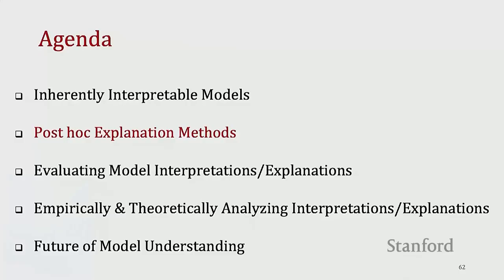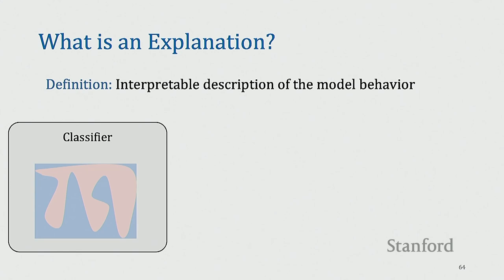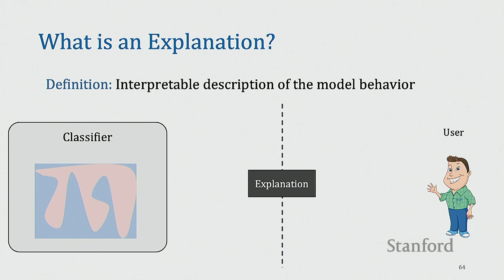So part two of our discussion. Now we're going to focus on post-hoc explanation methods. Unlike what we have been talking about so far, there is no longer a model that is trying to be inherently interpretable. We are in a situation where we essentially have a complex classifier that we can't touch. There's an end user and we need to provide some interpretable description of this model's behavior to the end user. The explanation will be an interface between this complex model and the end user.